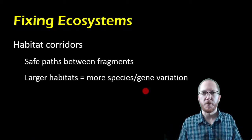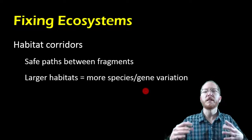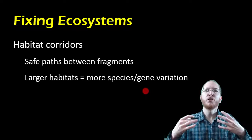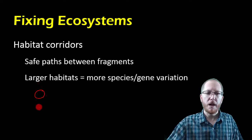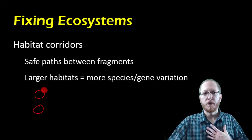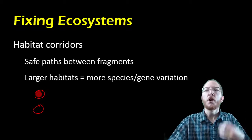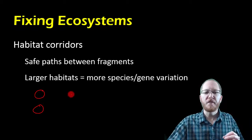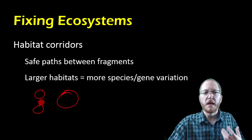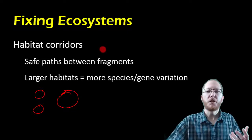If we've already damaged an ecosystem, there are ways to try to fix it beyond just preserving. One issue is fragmentation, where we've got small chunks of habitat that aren't as useful because they're so small. Small areas have less biodiversity — you can't have larger species living there, and because populations are small, you get less genetic diversity. You'd much rather have one big island than two small ones.